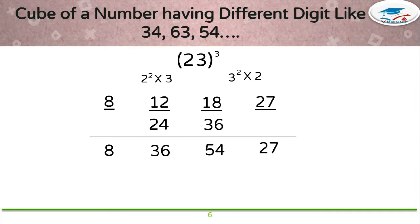...only unit digit of every number. Write 7 and take 2 to next number. That is to 54. So 54 plus 2 is 56. Write 6 and 5 will be carried to 36. 36 plus 5 is 41. 4 will be carried to 8. 8 plus 4 will become 12. So your answer is 12,167. Here is your answer.